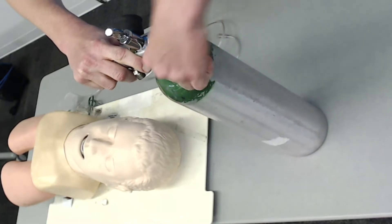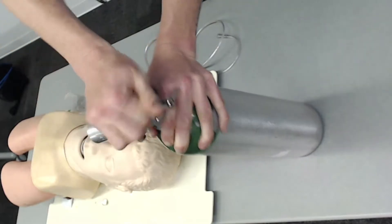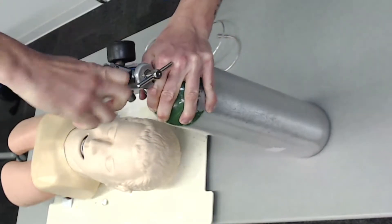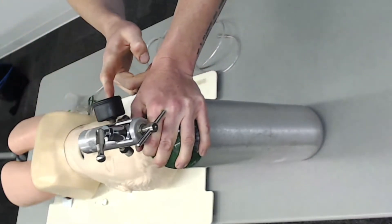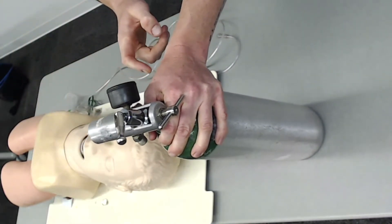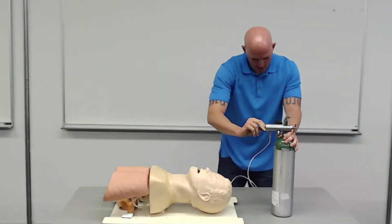Now I'm going to open it and look at my pressure. We've got about 1600 psi in this one. I'm going to grab my non-rebreather, plug it in, and turn this to 15 liters per minute. I know I have no leaks before I start.